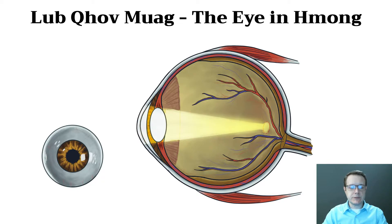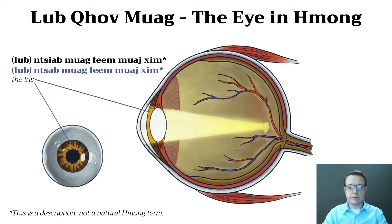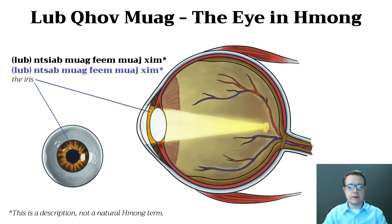Now let's go over some of the different anatomical parts of the eye. From this point on, these are descriptions, not natural terms. For example, the sclera — which is the outside white part of the eye that you see — and the iris. There are some rare older terms to describe the iris, but it's easier just to use a descriptive phrase in Hmong. That is not a natural term but a description.